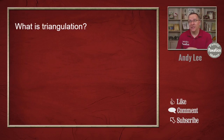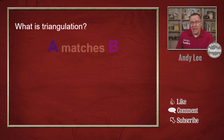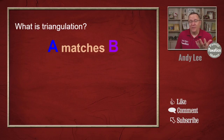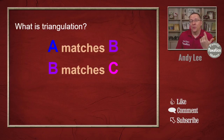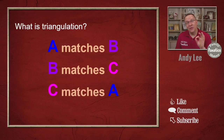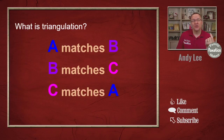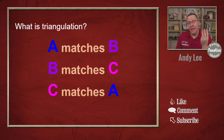Let's go over triangulation. To begin with, you need to have at least two people. You need to have a match — A has to match B. But for triangulation, you need to add a third person, C. B has to match person C, and we need to have person C match person A. So we have at least three people and all three of them match each other.